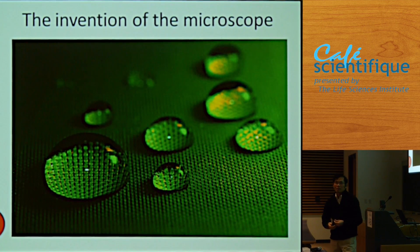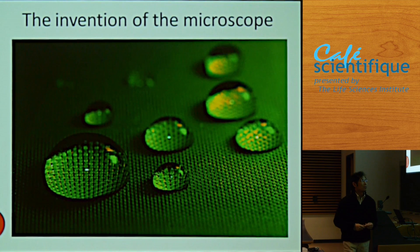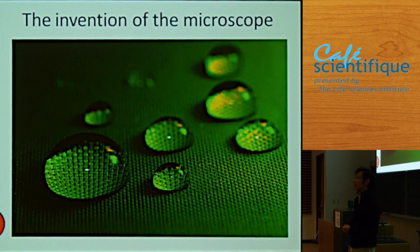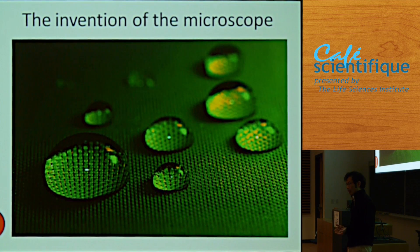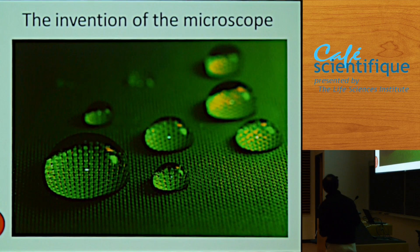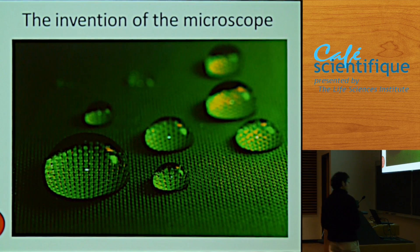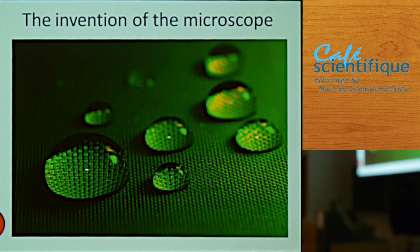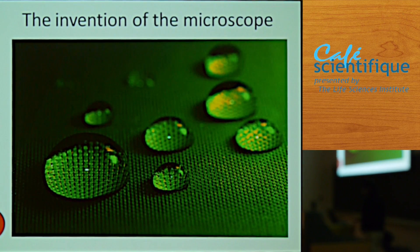But the Chinese people never managed to use glass. So the modern microscope that we have been using mostly came from Europe.